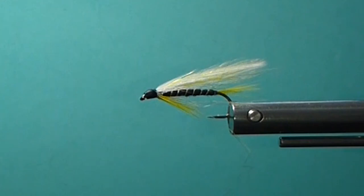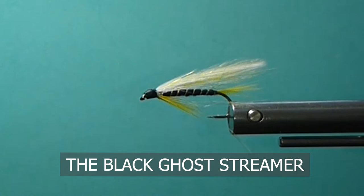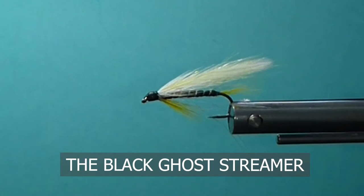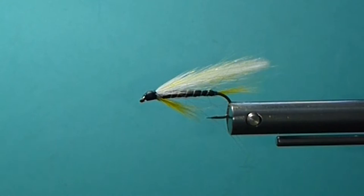Good day everyone. Today on the bench I'm going to tie you up a black ghost. This is one of my favorite flies for brook trout. I'll show you a little variation here. I'm going to add some polar bear into this pattern. It's never been tied that way originally, but I just like the way it looks in the water. Great little add-on.